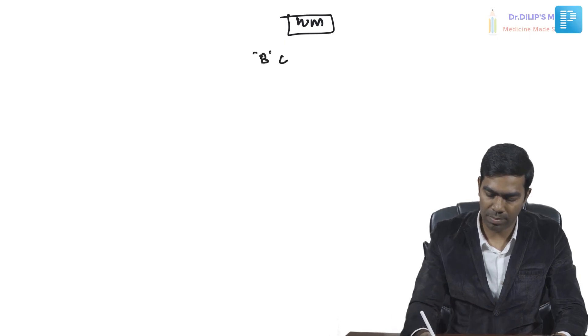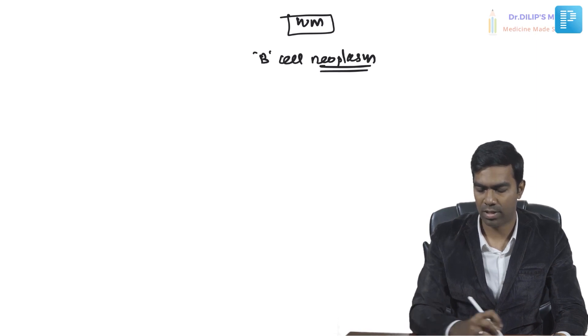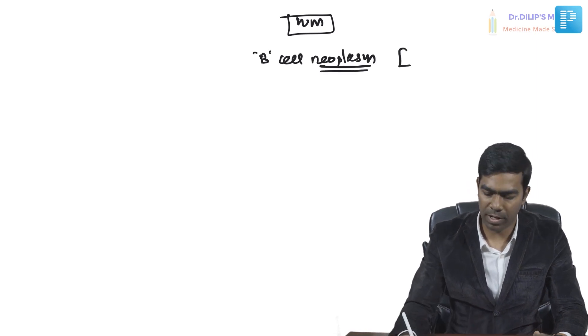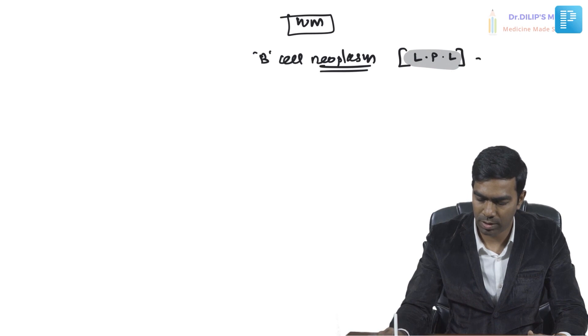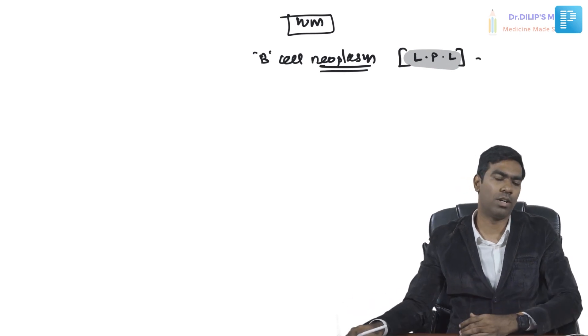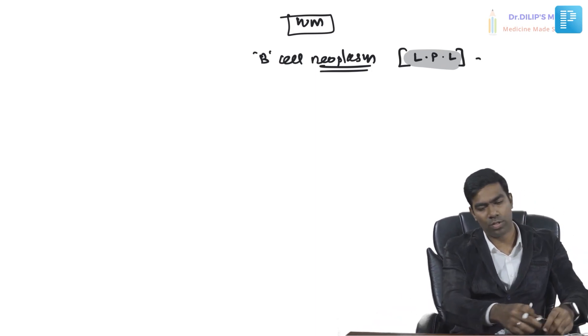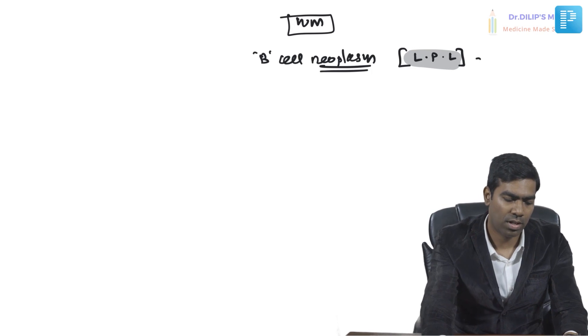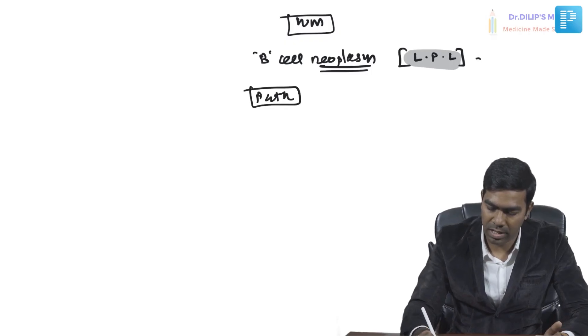Waldenström's macroglobulinemia is a B cell neoplasm — a malignancy — but it is not made of plasma cells. Instead, it is made of lymphoplasmacytic lymphocytes. These cells resemble lymphocytes, which is why they are called lymphoplasmacytoid lymphocytes. That is what Waldenström's macroglobulinemia is.